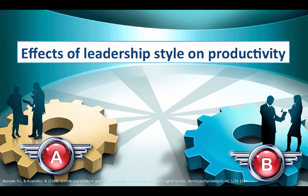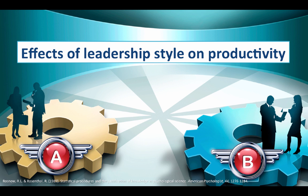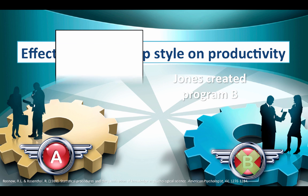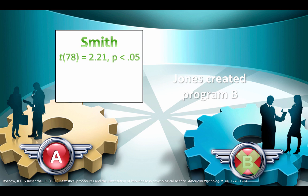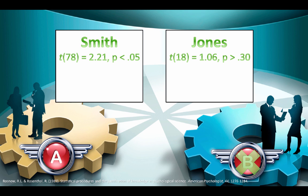Smith conducts an experiment with a sample size of 80, comparing the effects of two leadership styles on productivity. Smith finds that style A is better than style B. Jones is skeptical because Jones created style B, so he replicates Smith's study with a sample size of 20. Smith's original study had a t of 2.21, 78 degrees of freedom, p less than 0.05. Jones reports a failure to replicate: his t-value was 1.06, 18 degrees of freedom, p greater than 0.30.